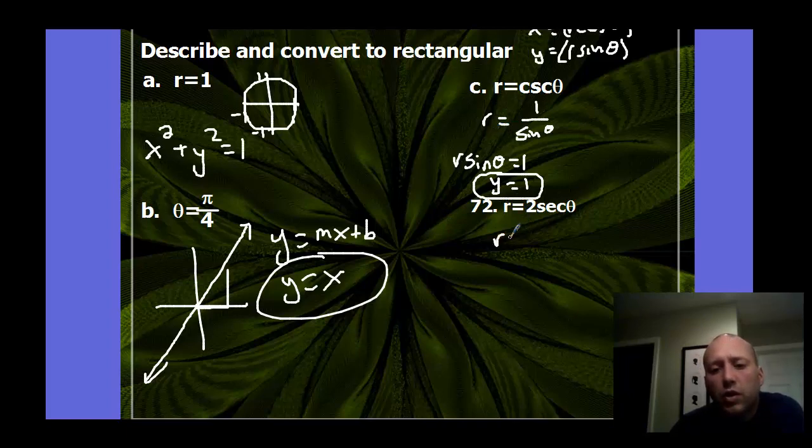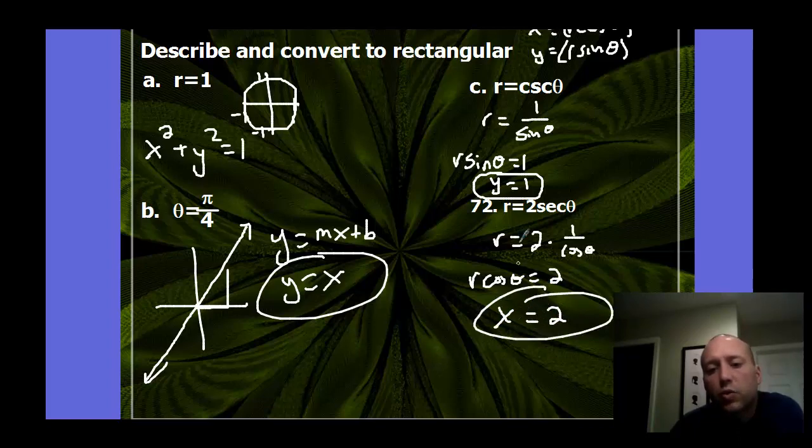The next one here, we have r equals 2 secant. So it's 2 times 1 over cosine theta, write it out simple, which is r cosine theta equals 2. And r cosine is x, so we get x equals 2. So this, again, is the rectangular equation for this polar equation. So we're just converting back and forth between polar to rectangular and rectangular to polar.